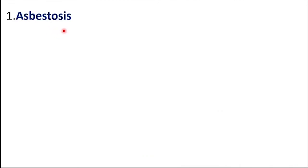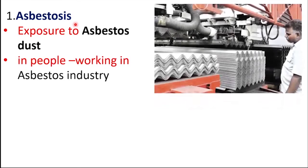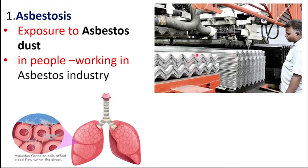Coming to Asbestosis — it is the disorder caused due to chronic exposure to asbestos dust. It is observed in people working in the asbestos industry. Those asbestos particles form fibers and pulmonary tissue becomes fibrous. Fibrosis is the characteristic feature of asbestosis.